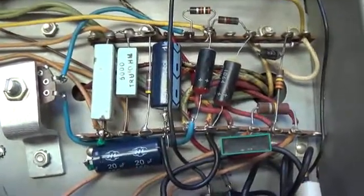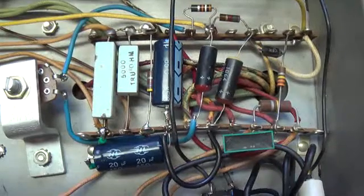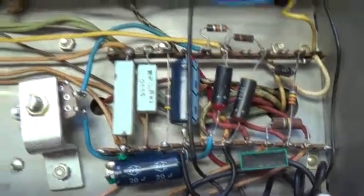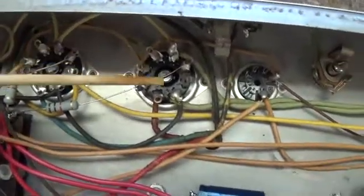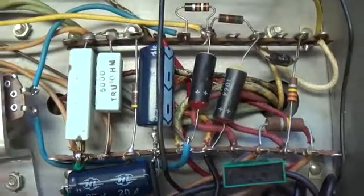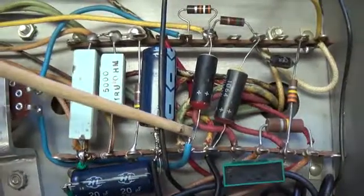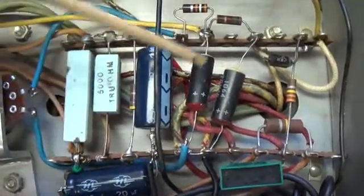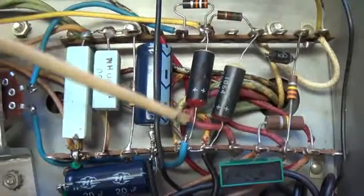This is a Gibson GA35 fixed bias amp with 7591 output tubes. The bias voltage was controlled by a 47k resistor that bridged this gap.